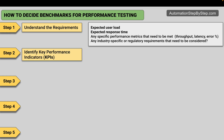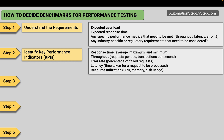Step two is we will identify the KPIs, or key performance indicators. The standard KPIs include response time (minimum, maximum, and average), throughput (requests per second), error rate (percent of failed requests), latency (the time taken for the request to be processed by the server), and resource utilization like CPU, memory, and disk usage during testing. We have to talk to stakeholders and the business team to get all KPIs that need to be tested.